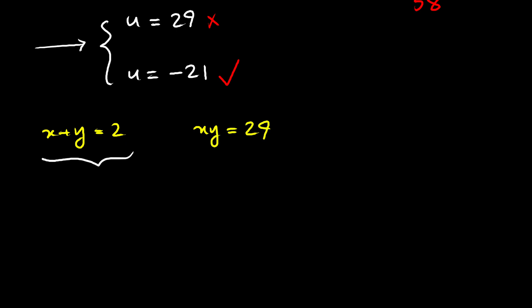Now, if we square both sides, we will have x squared plus y squared plus 2xy equals 4. From this, I can say that x squared plus y squared equals 4 minus 2 times xy, which is 2 times 29. Now, obviously, without doing any calculations, we can say that this is negative. But since x and y are real numbers, this is totally positive. So, we have a contradiction. Therefore, this is not valid. u equals 29 is not valid.